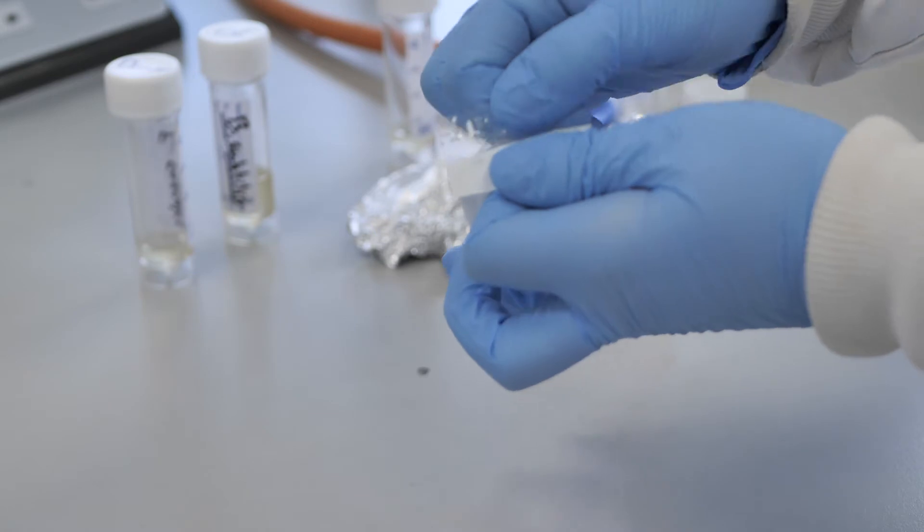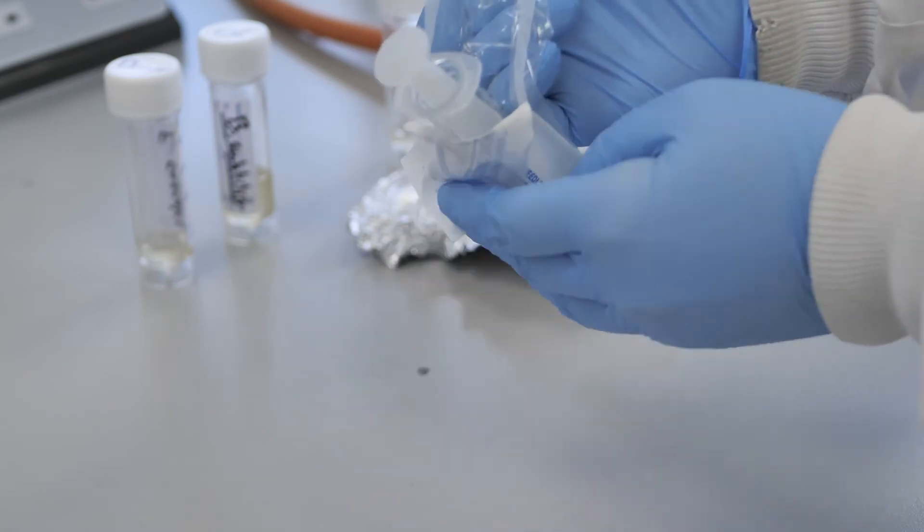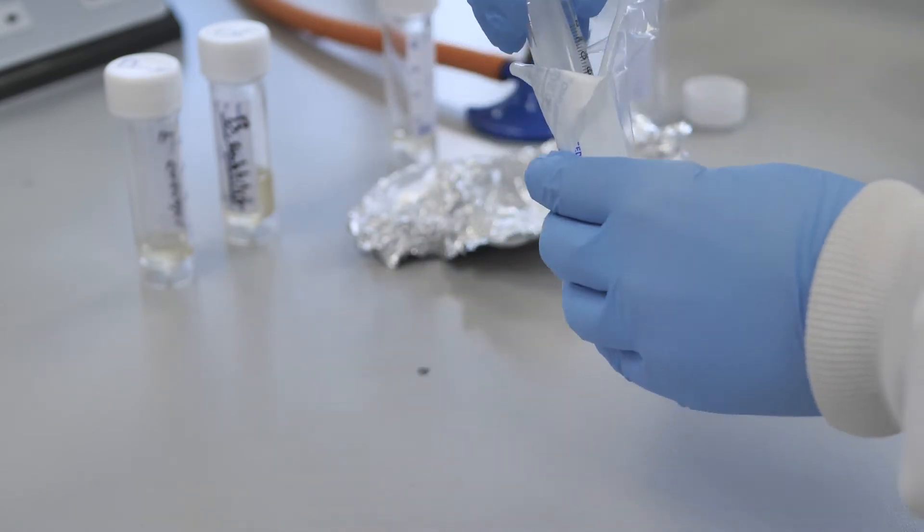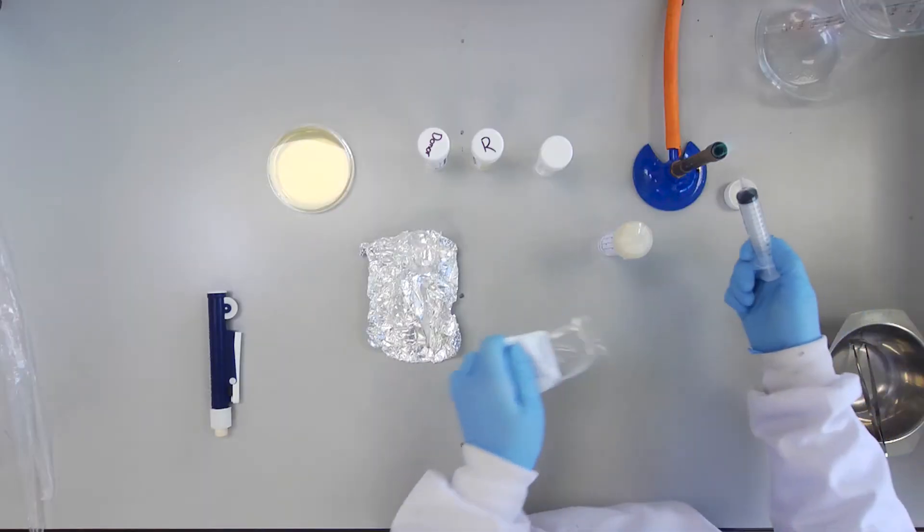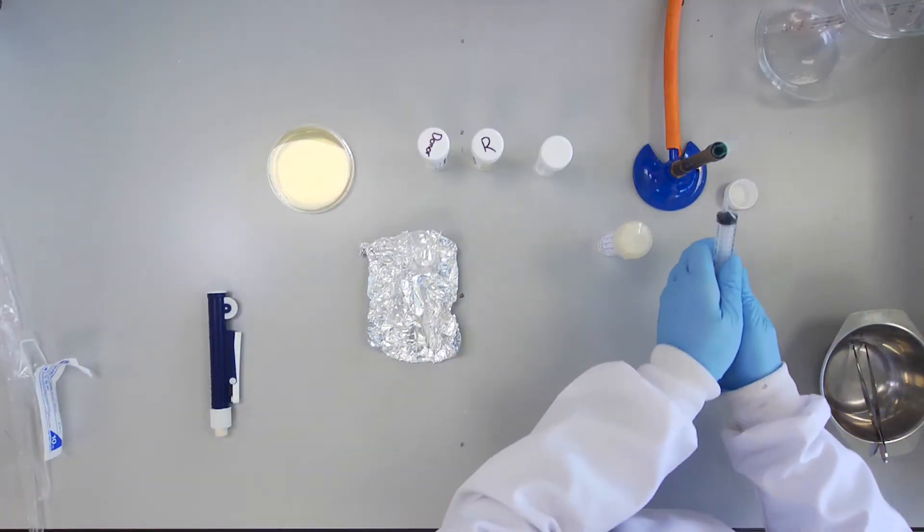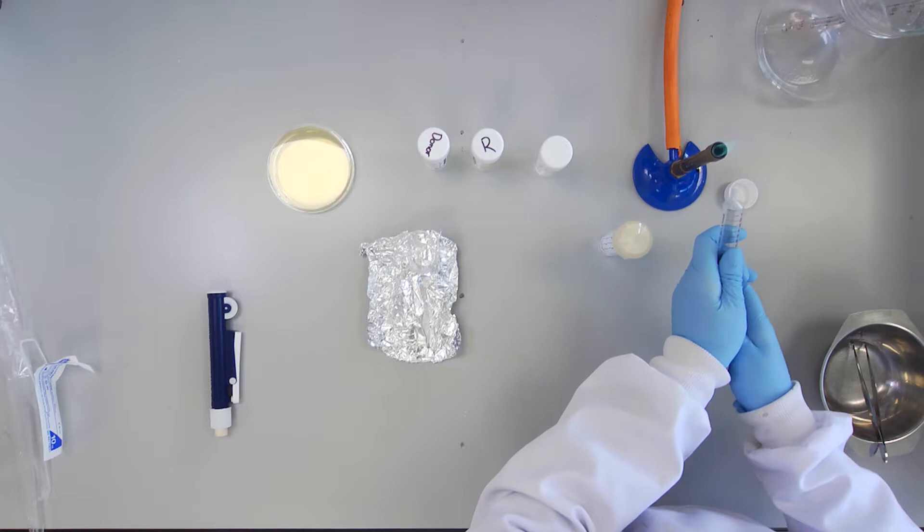Aseptically remove the plunger from a 10 milliliter syringe and secure this on top of the Swinex filter, again working close to the Bunsen flame.